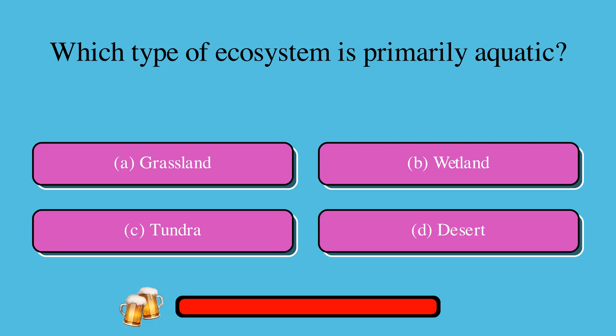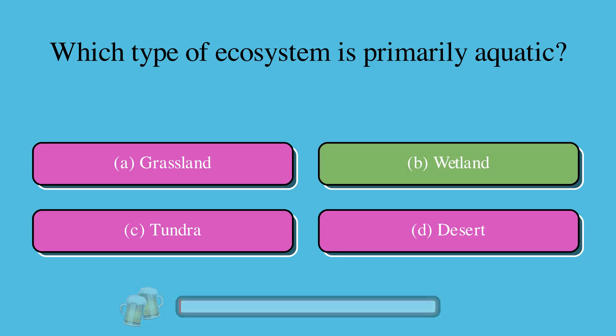Which type of ecosystem is primarily aquatic? A. Grassland, B. Wetland, C. Tundra, or D. Desert? The correct answer is B. Wetland.